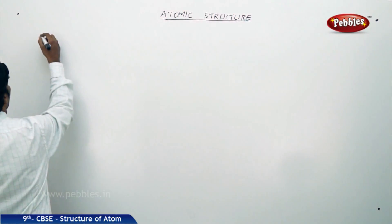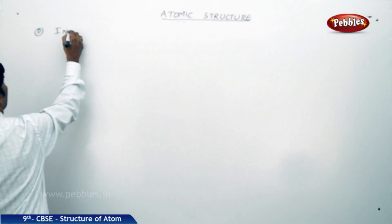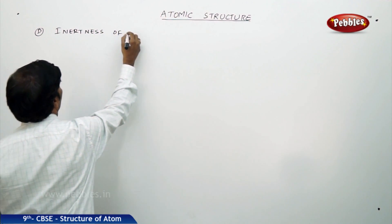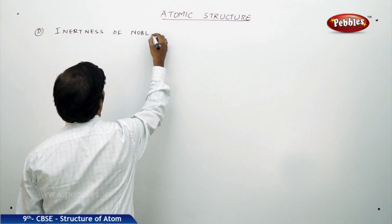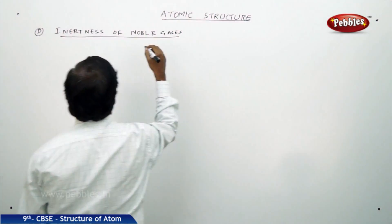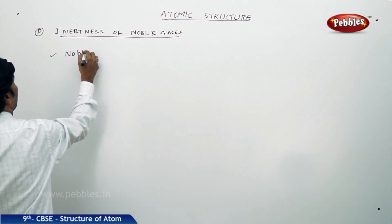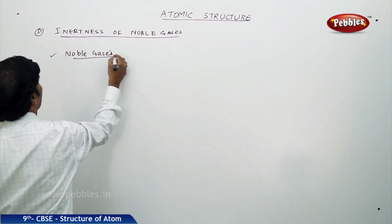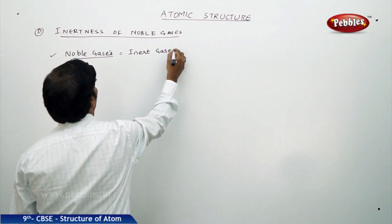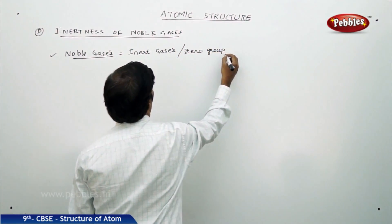For the next part of the discussion, we are going to talk about the inertness of noble gases. Noble gases are also called inert gases, and they are also called zero group elements.